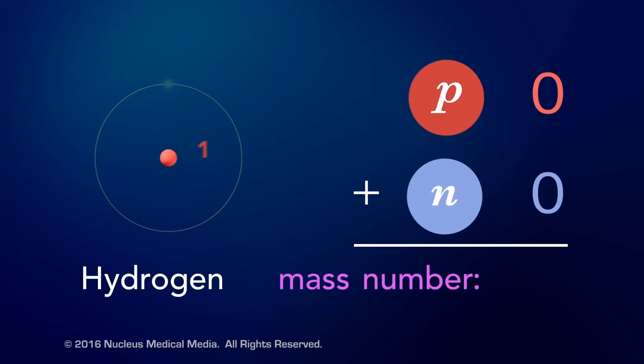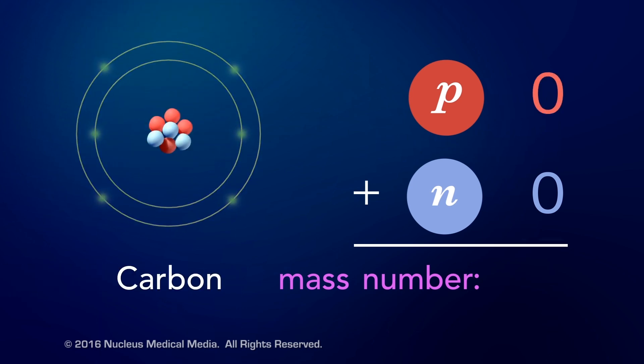In this example, the mass number of a hydrogen atom is one. Hydrogen is the only element that usually doesn't have any neutrons. The mass number of this carbon atom, with six protons and six neutrons, is 12.